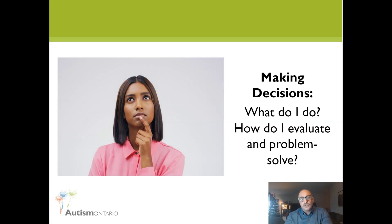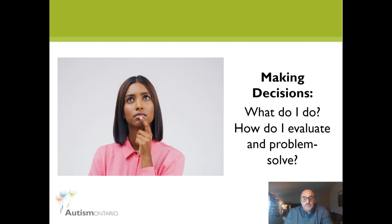I'd like to address the language we'll be using during the presentation. Autism means something different to everyone. The different terms you'll hear us use are either person-first perspective — for example, 'person with Autism' — or identity-first label — 'Autistic person.' Person-first language reflects the idea that Autism can be separated from a person and doesn't define them, while identity-first language reflects the belief that being Autistic is an important part of a person's identity and cannot be separated.